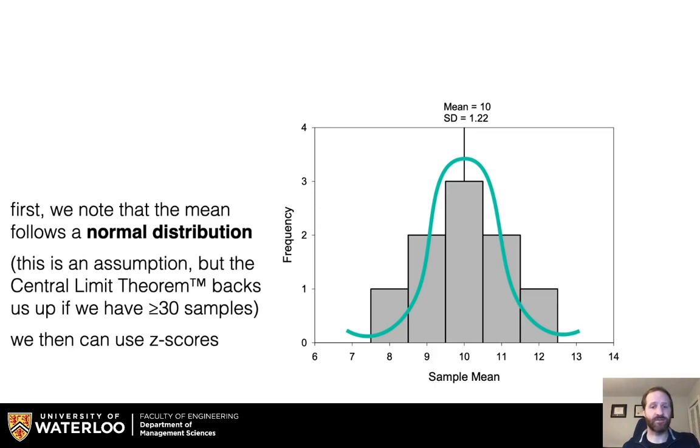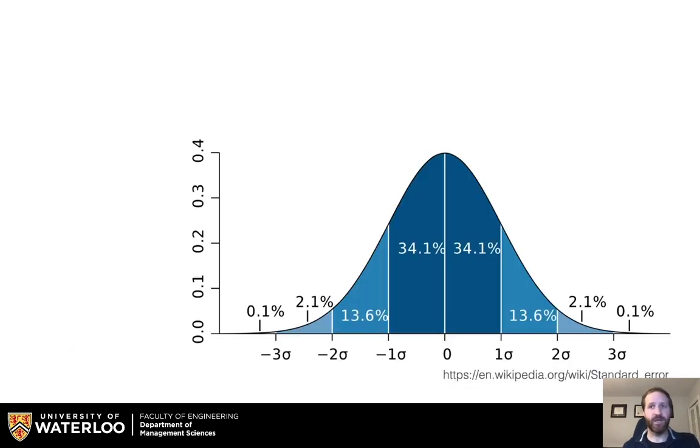We can then use z-scores. So if we have a normal distribution, we have 68.2% of the values falling within one standard deviation, 95.4% falling in two standard deviations.